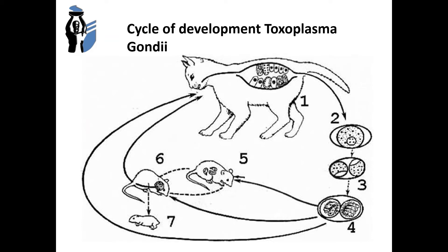After definitive host infection, in intestinal cells the schizogony occurs. This phase includes gametogony, fertilization, and oocyst formation. Oocysts are released with the cat feces into the external environment. Inside the oocyst, the process of sporogony, or the formation of sporozoites, occurs.